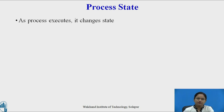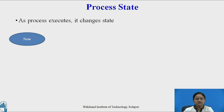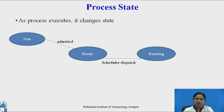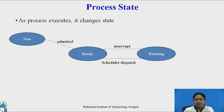Let us look at the different process states. As a process executes, it changes its state. When a process is newly created, its state is 'new,' indicating the process is being created. Once created, it is admitted to the ready queue. It is then the task of the scheduler to dispatch that process to the CPU. When given to the CPU, the process transitions from the ready state to the running state. While running, an interrupt may occur, and to service it, the process must switch from the running state back to the ready state.